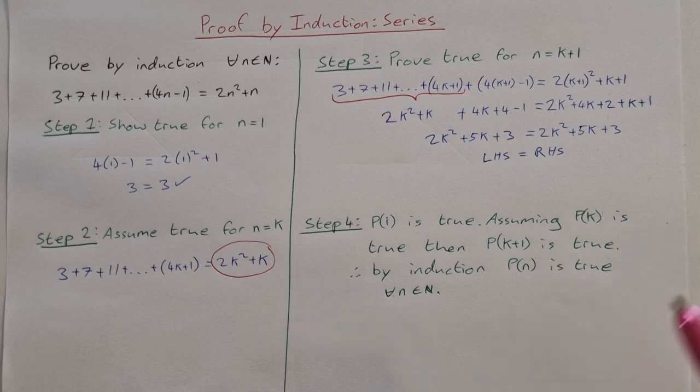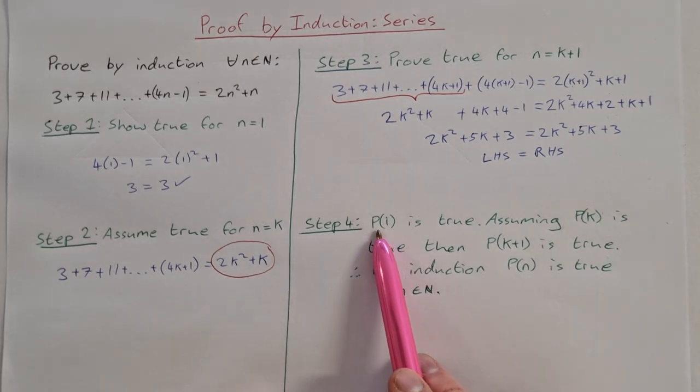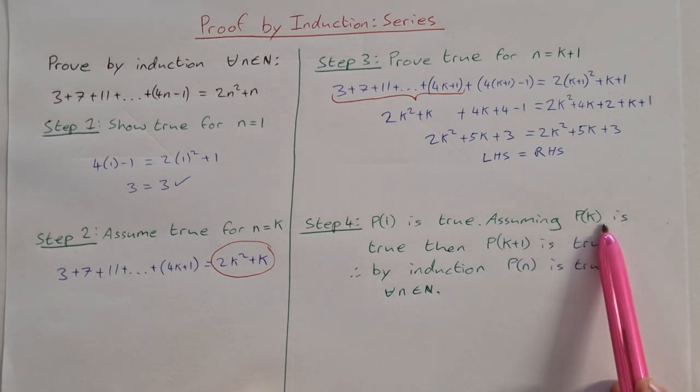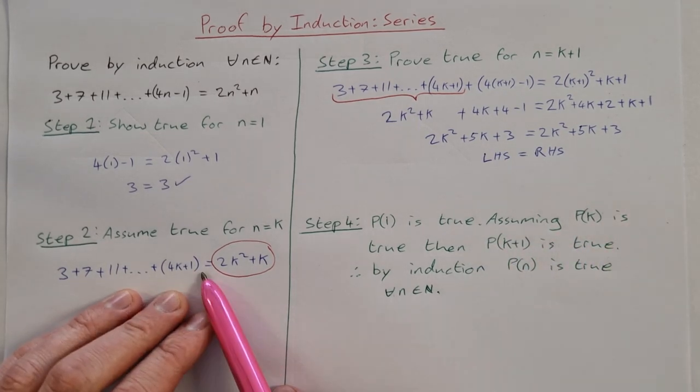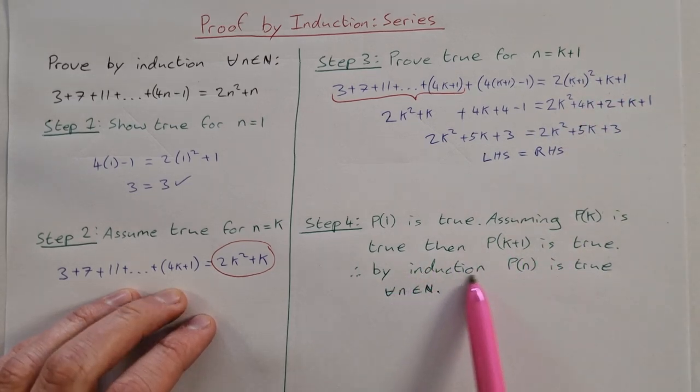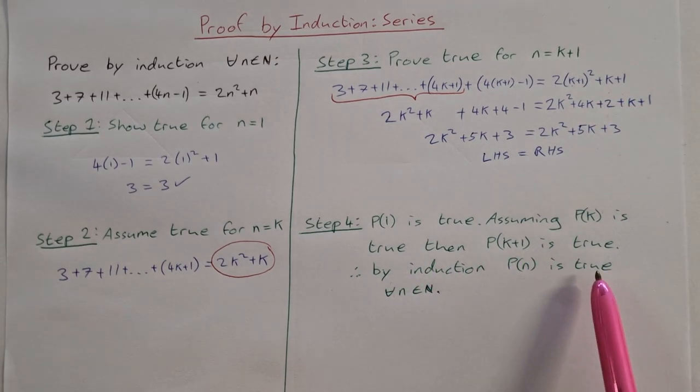Your last step is just your conclusion that you always do at the end. So step 4: P(1) is true, we showed that in step 1. Assuming P(k) is true, that's our assumption from step 2. If this is true then step 3 is definitely true, and therefore by induction P(n) is true for all n element of N.